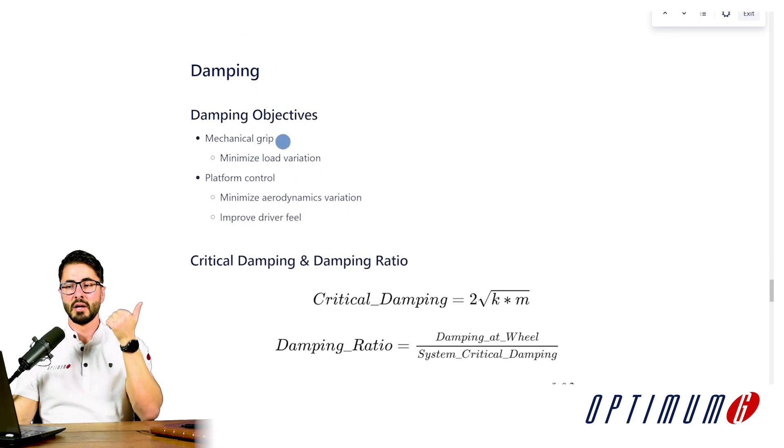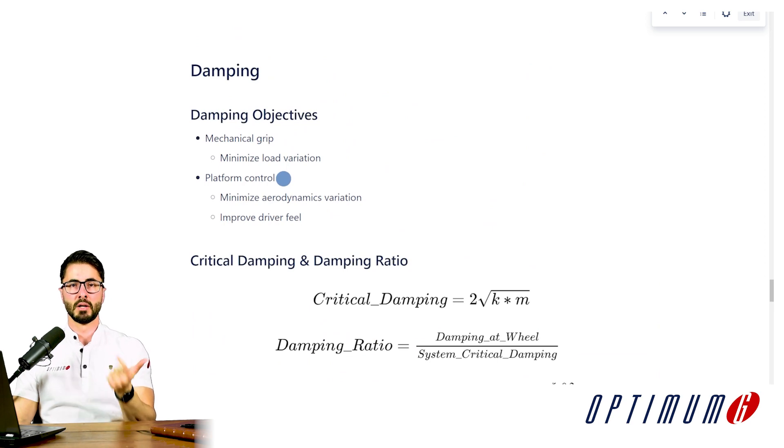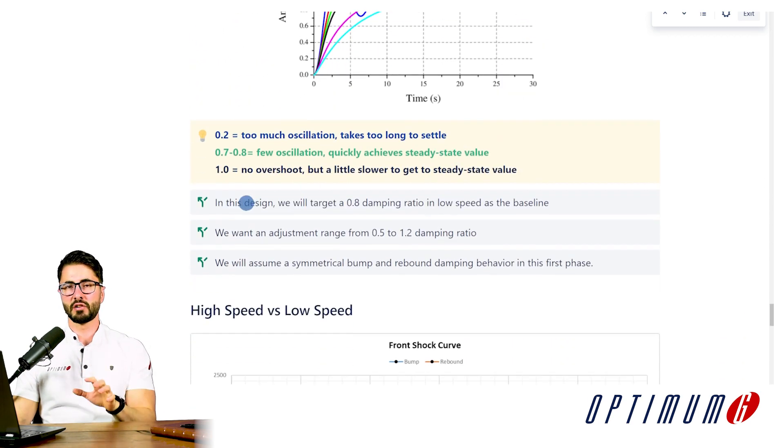So when you go and you do post rig simulations or post rig testing, then you get convinced that indeed for many, if not most race cars, a good starting point would be between 0.7 and 0.8 damping ratio. Why? Because in this range, you seem to find the ideal compromise between our two objectives. You are trying to minimize load variation at the same time as minimize platform control. Because of these reasons, for this initial design before we run post rig simulations, I will target a damping ratio of 0.8 for the baseline setup.